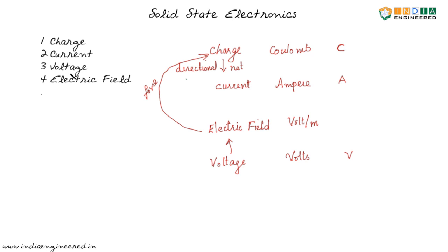So to summarize: apply voltage, it sets up an electric field. Charges in an electric field experience a force, and if that force is sufficient and charge carriers are moving in a particular direction, you can say that there is a current flow. The units are really important — please take a look at these units and the relation between them.